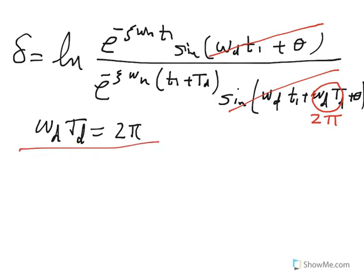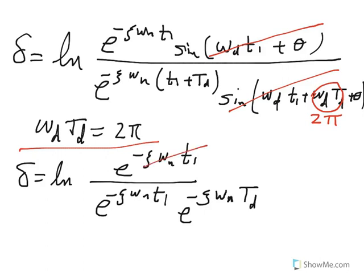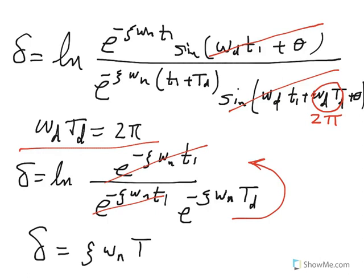That brings us to: delta equals the natural log of the exponential ratio. We can expand the denominator by breaking it into two exponents. Those terms cancel, and the negative exponent comes up as positive. Since the natural log and e are inverses of one another, delta simply becomes zeta · ω_N · T_D, where the negative sign becomes positive.